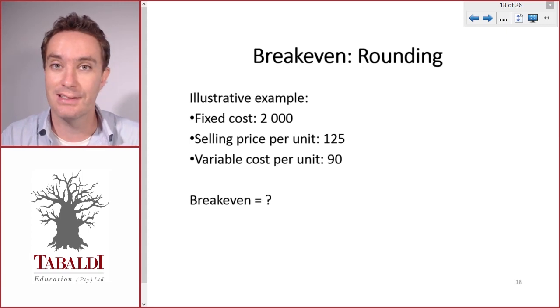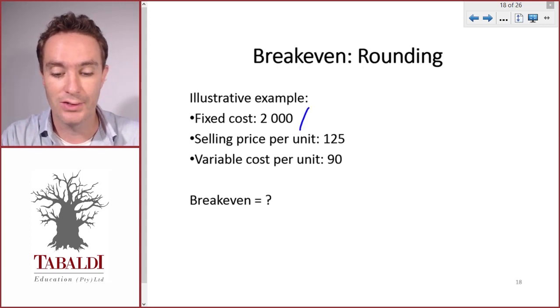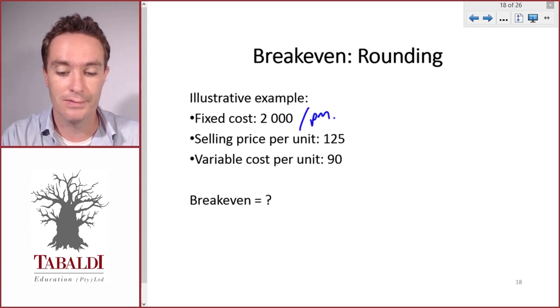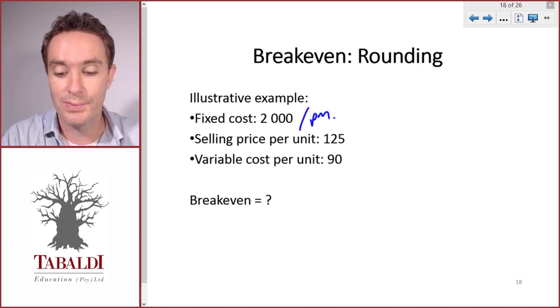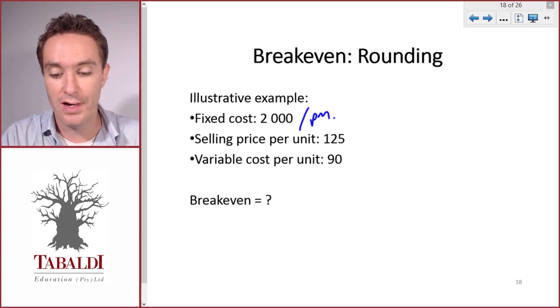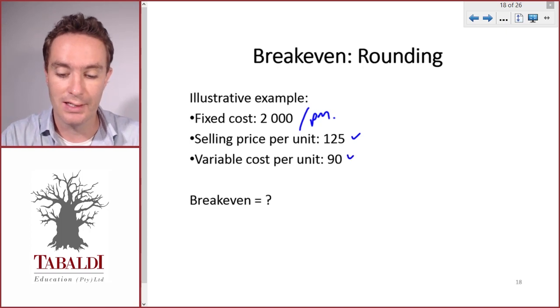We've got a company that sells bicycles. The fixed costs amount to 2,000 per month. The selling price per unit is 125 and the variable cost per unit is 90.